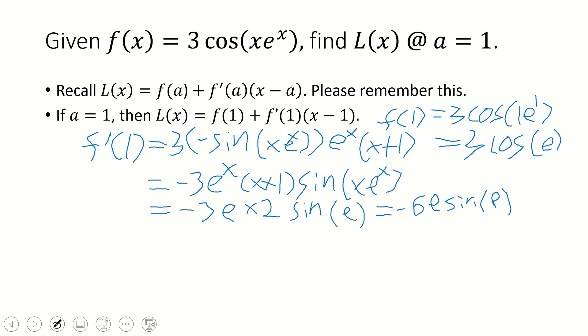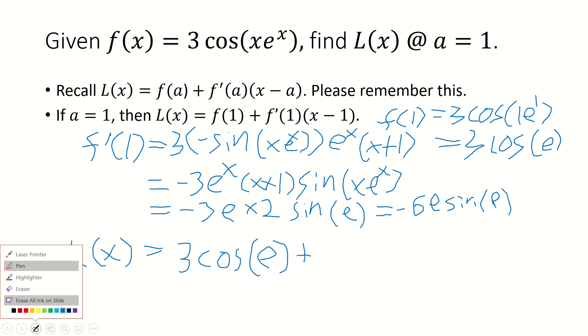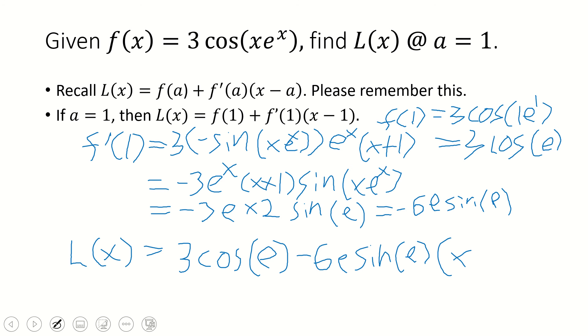Hopefully that made sense. If not, I might do a derivative solving video later on, but that is it for f(1). So let's solve the final equation on here, or not solve, just formulate it. L(x) = f(1), which is 3cos(e), minus 6e·sin(e), and then multiply by (x - e). And that is the solution right here.